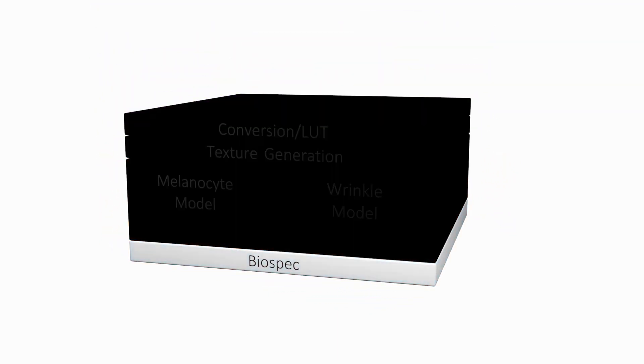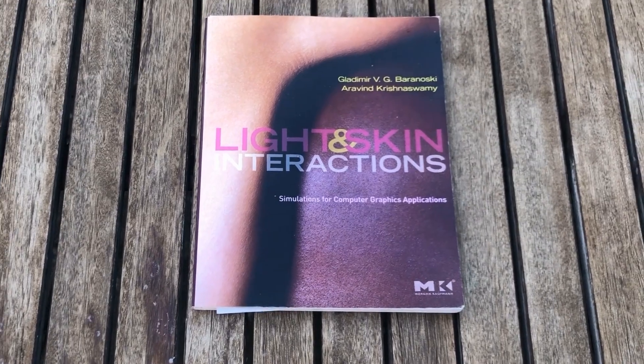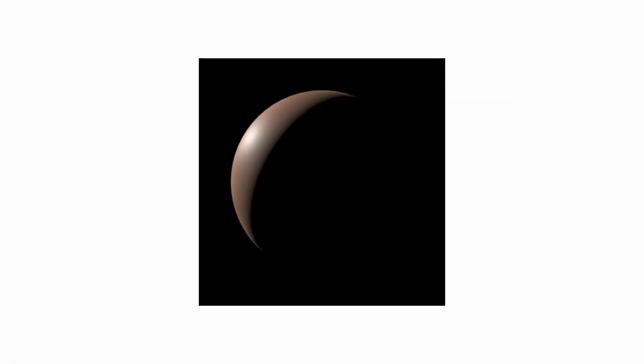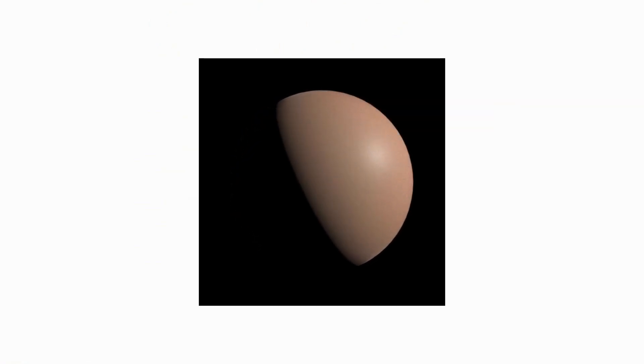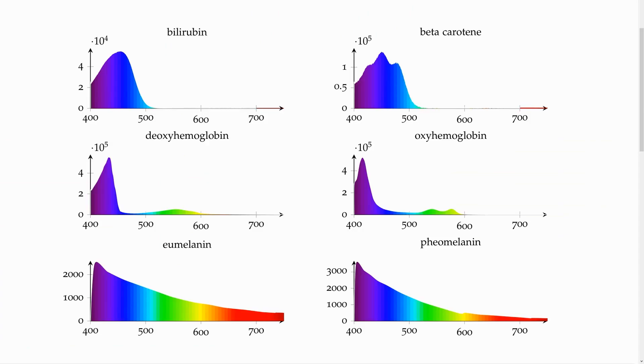First and foremost, the light scattering model of light through skin. For this, we use Baranowski's BioSpec model. It works by stretching a cross-section of skin to an infinite plane and scattering different wavelengths of light through each layer. With this, we can capture a faithful BRDF of skin under biological parameters — such as the thickness and bulk scattering of layers, or the concentration of pigments that give skin its specific color.